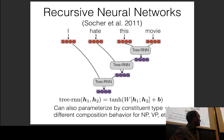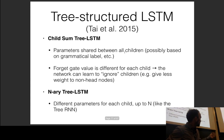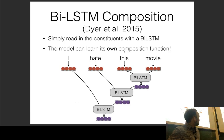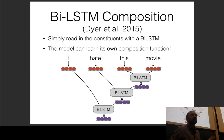There's also an N-ary tree LSTM with different parameters for each child, as well as bidirectional LSTM and attention-based versions. The key idea is to take a set of vectors corresponding to children and combine them into a single vector — any combination function works.